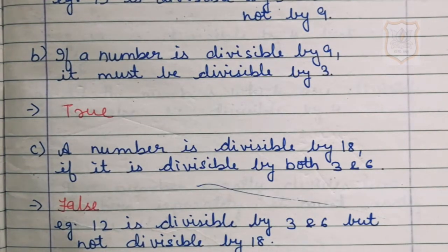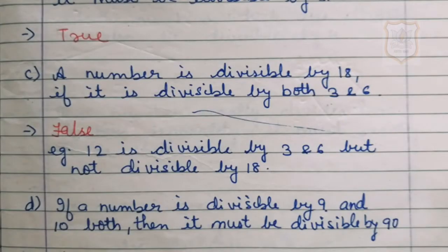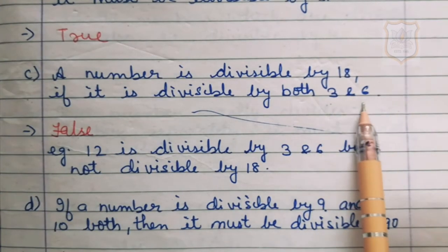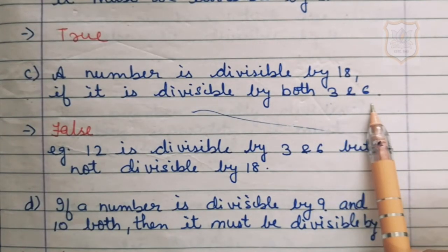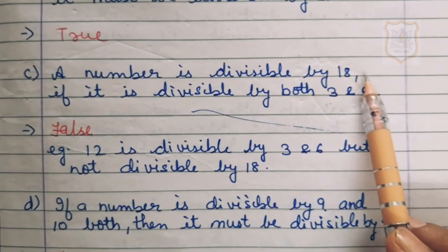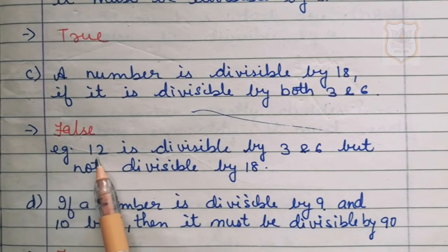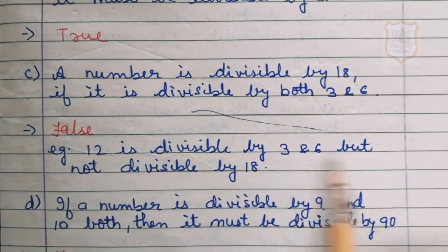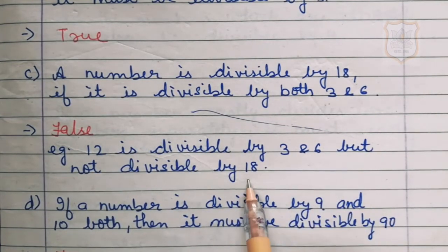Part C of question number 1: a number is divisible by 18 if it is divisible by both 3 and 6. If a number is divisible by 3 and 6, is it divisible by their product 18? The answer is false. For example, 12 is divisible by both 3 and 6, but it is not divisible by 18.